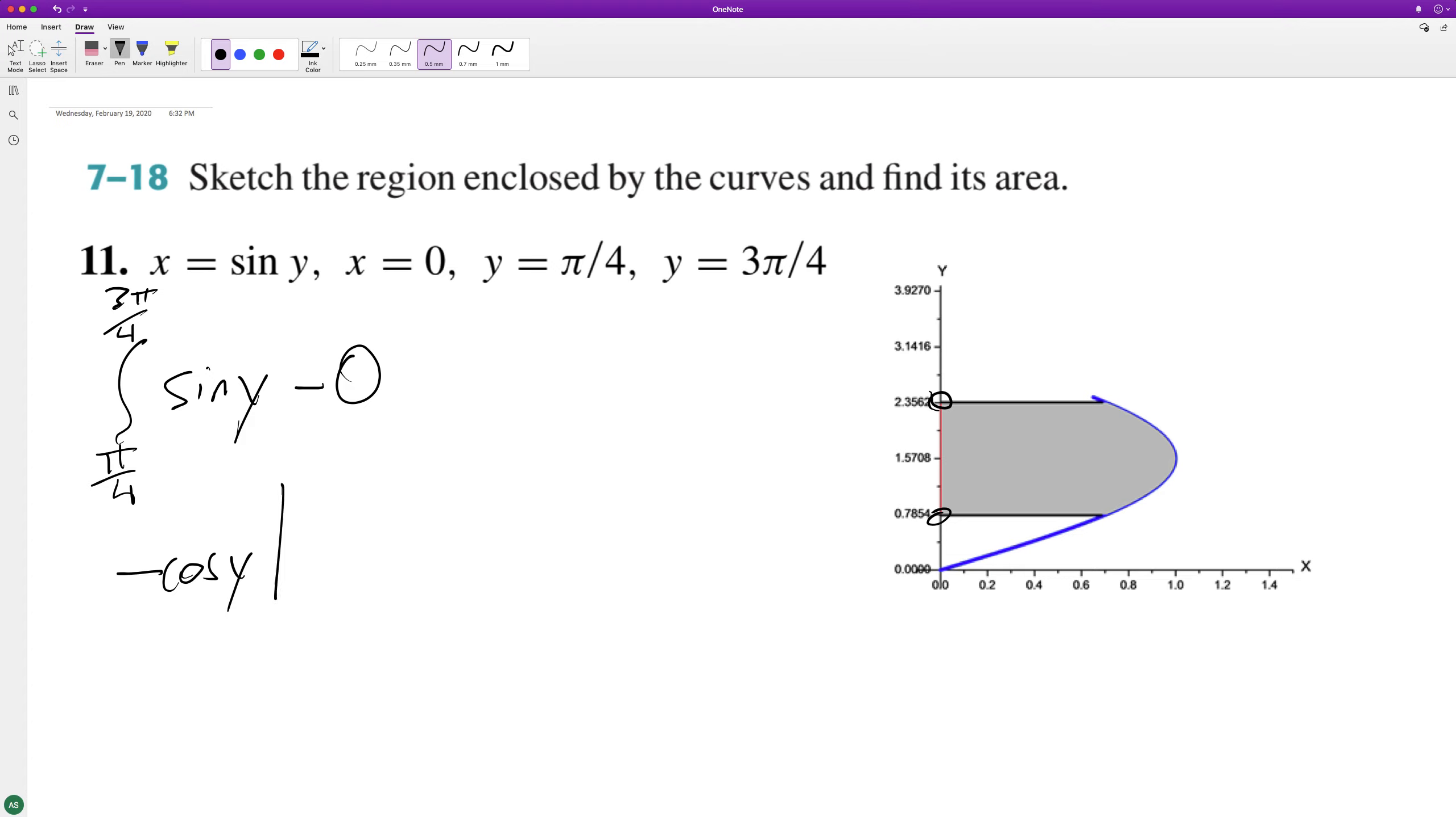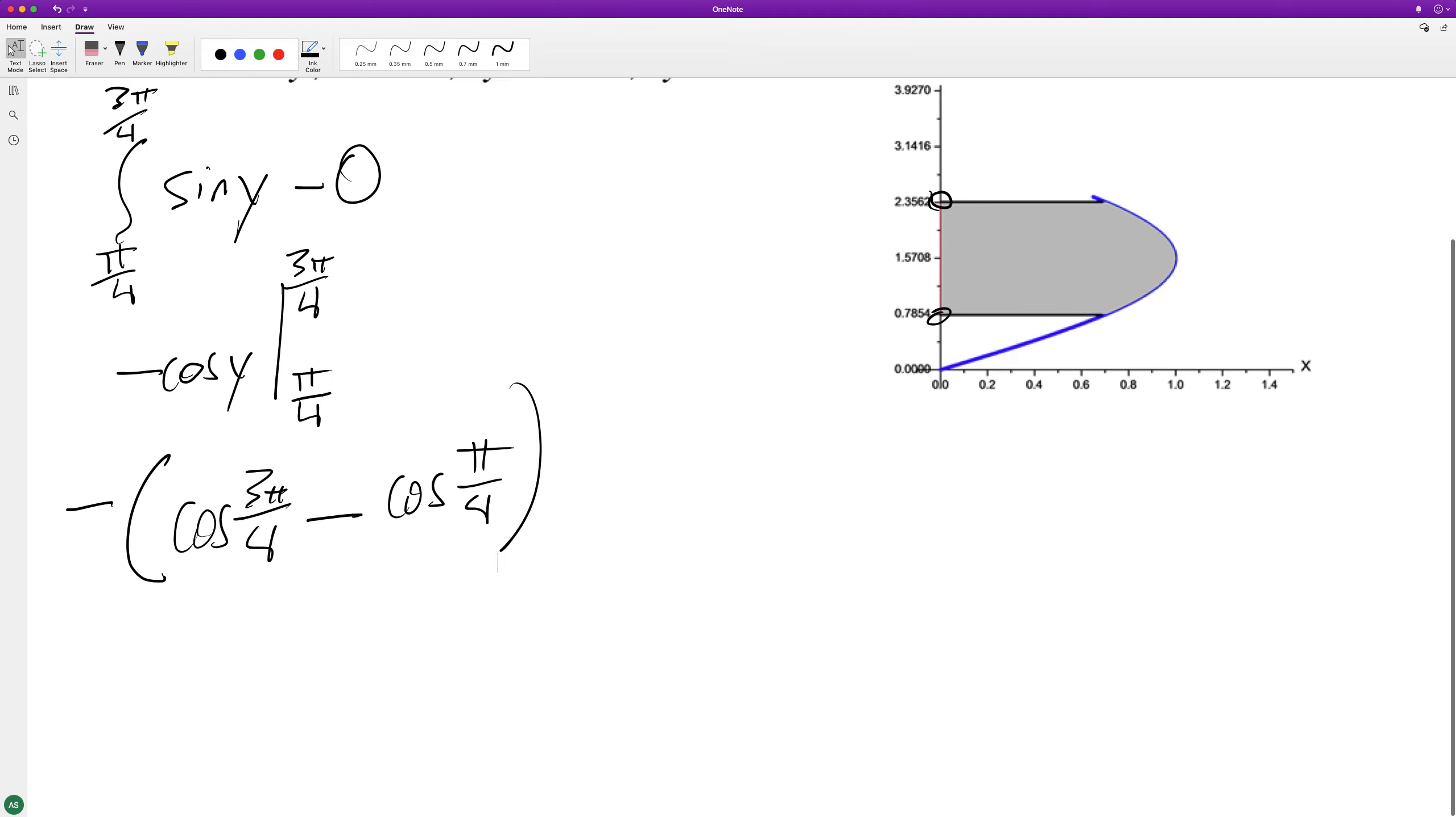So π/4 to 3π/4 - we can put the negative outside for now. So cosine of 3π/4 minus cosine of π/4.